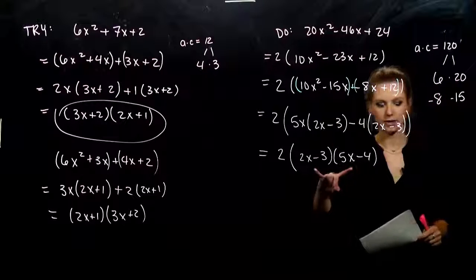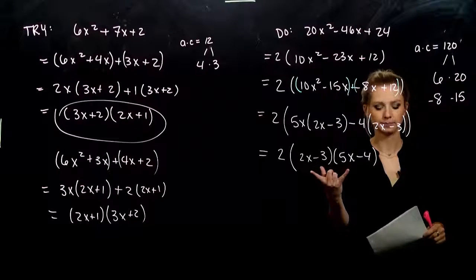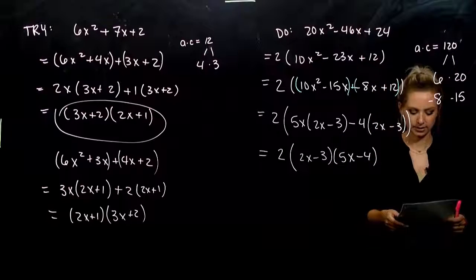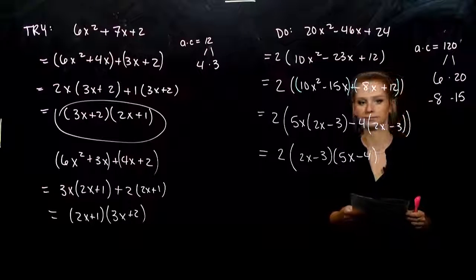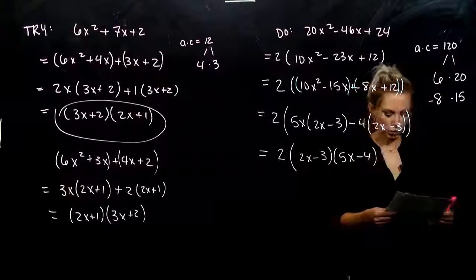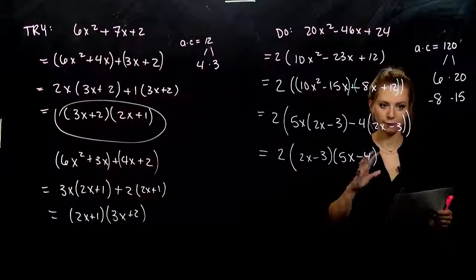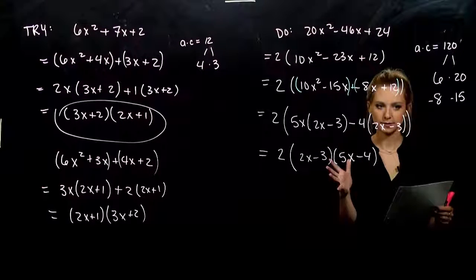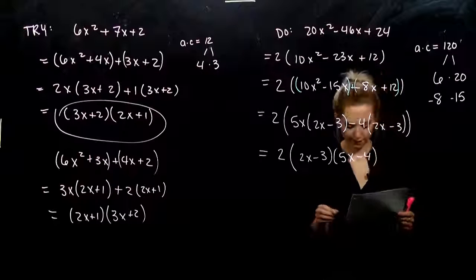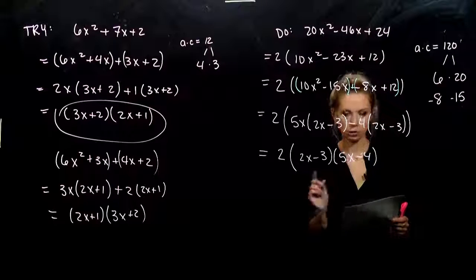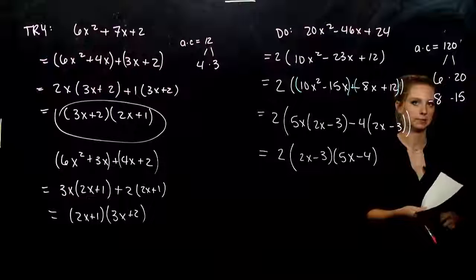Could you imagine trying to guess and check to get this factorization? It would take so long with numbers this large. The AC method is your friend — it's going to save you a lot of time. The order doesn't matter here, but we want to make sure we factor down as far as we can go. So, last one for you to try: take that trinomial, first see if there's anything common we can take out of everything. Use the AC method and factor it completely.